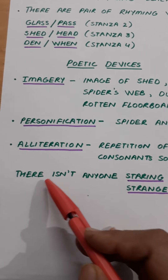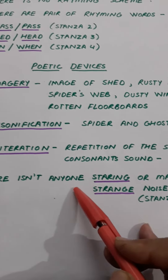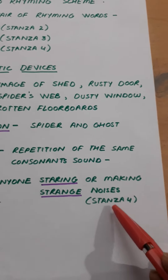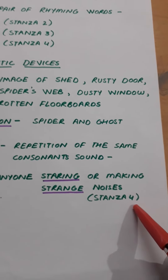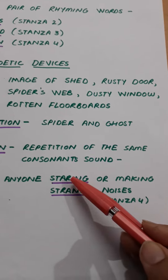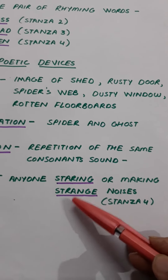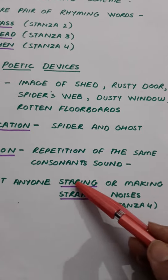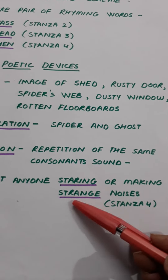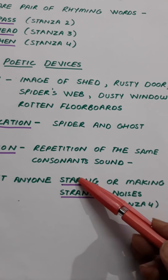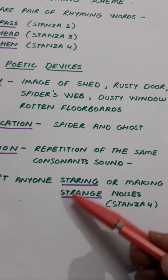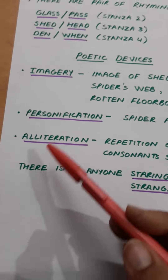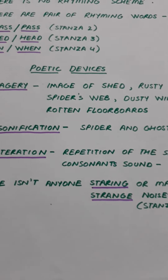For example, from stanza four: 'there isn't anyone staring or making strange noises.' In this line, staring and strange — both these consonant sounds are sounding similarly. So that is why it is alliteration. Thank you.